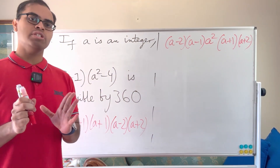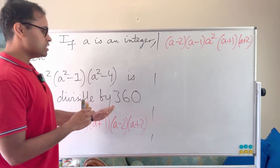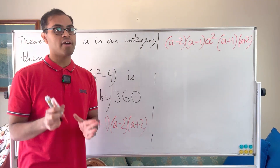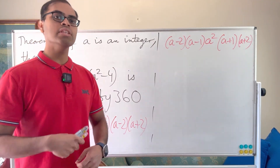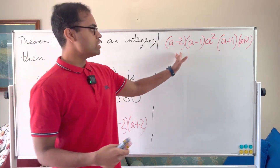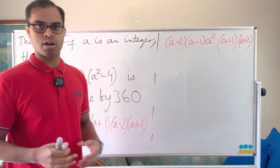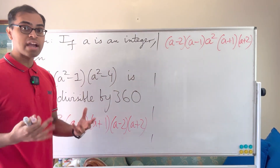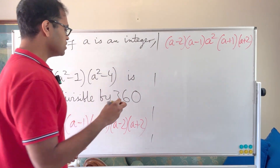The way we approach this is we factor 360 into prime factors, and then we show that those prime factors go into this product — that is, they divide that product.